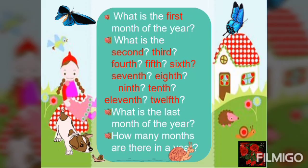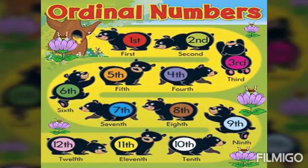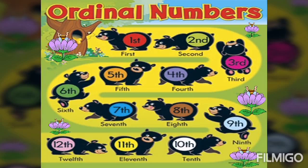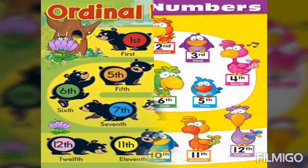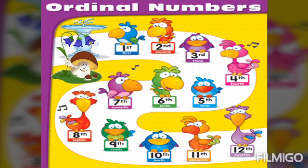This slide now shows examples of ordinal numbers. We can see here: first, second, third, fourth, fifth, sixth, seventh, eighth, ninth, tenth, eleventh, and the last one is twelfth.